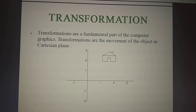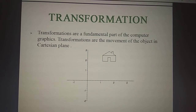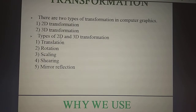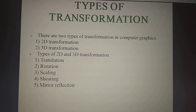Talking mainly about 3D transformations: transformations are a fundamental part of computer graphics. Transformation is the movement of an object in the Cartesian plane — whenever we move the object in any situation, like change in size, change in shape, or change in place, all this comes under transformation. We have already seen transformation similar to 2D. There are two types: 2D transformation and 3D transformation, and both have similar operations — translation, rotation, scaling, shearing, and reflection.